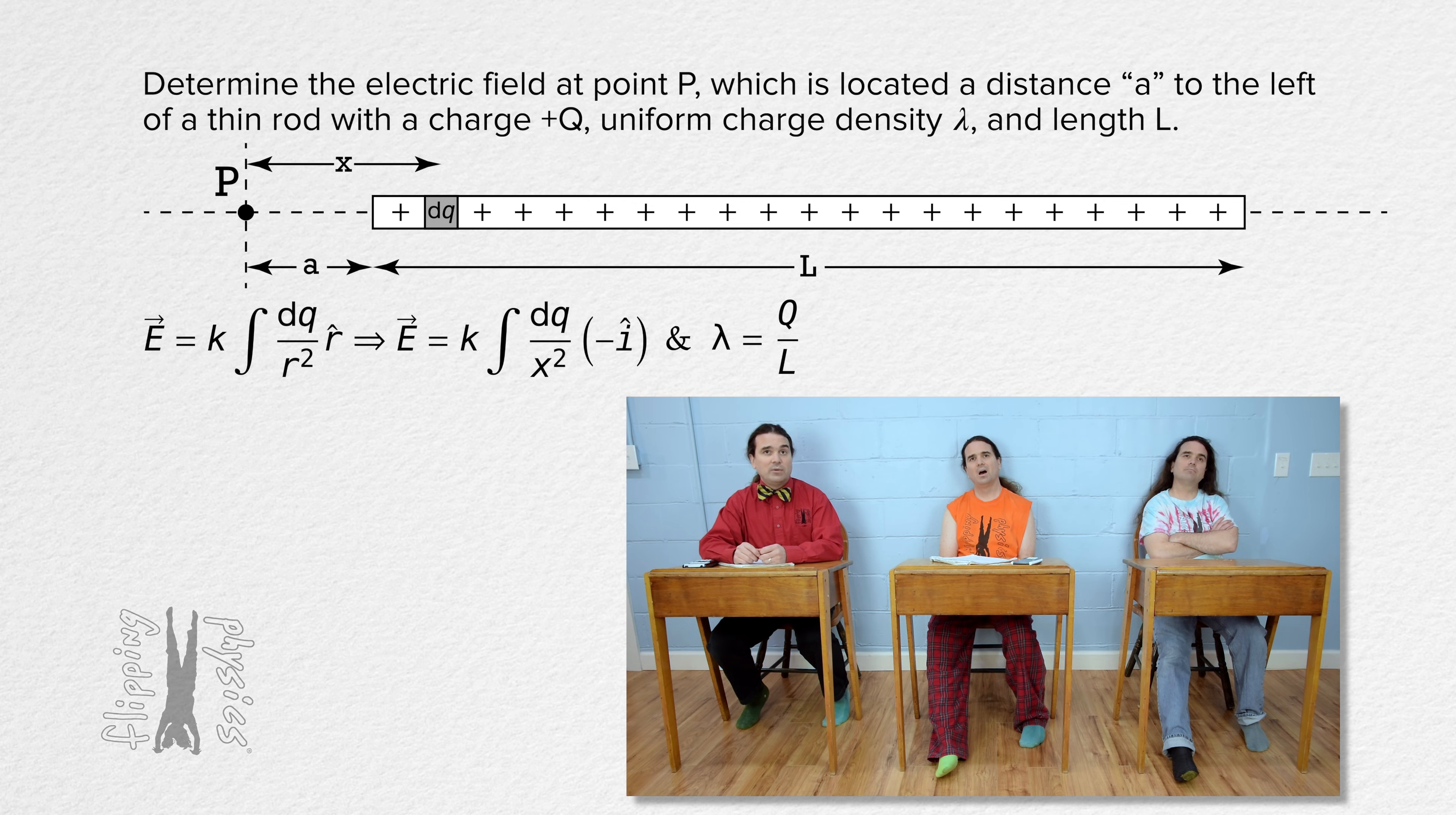Linear charge density also equals the infinitesimally small charge dq divided by the width of dq which is in the x direction, so let's call that dx. That means dq equals linear charge density times dx and the total charge equals linear charge density times the total length.